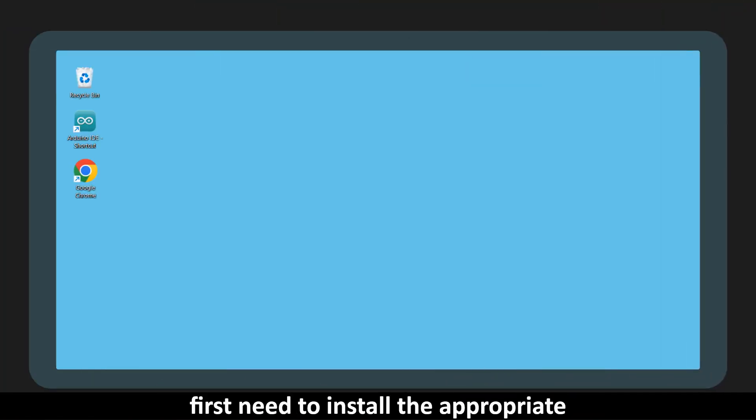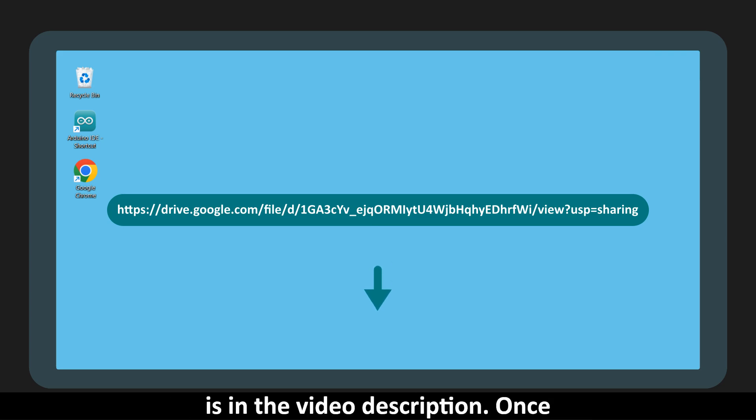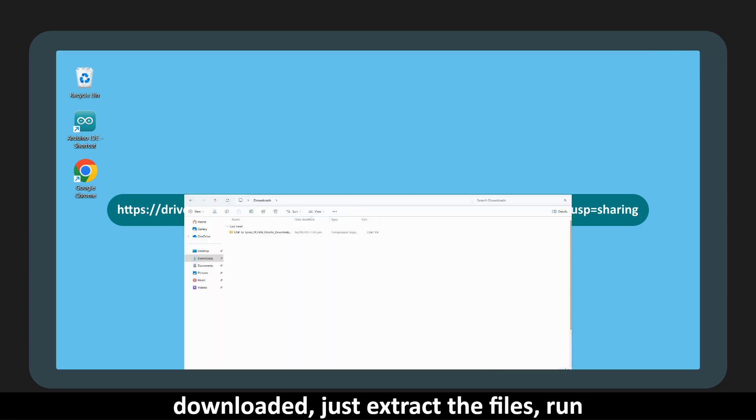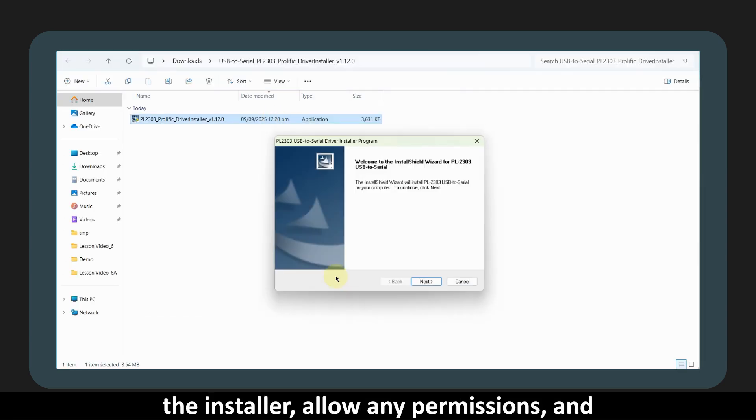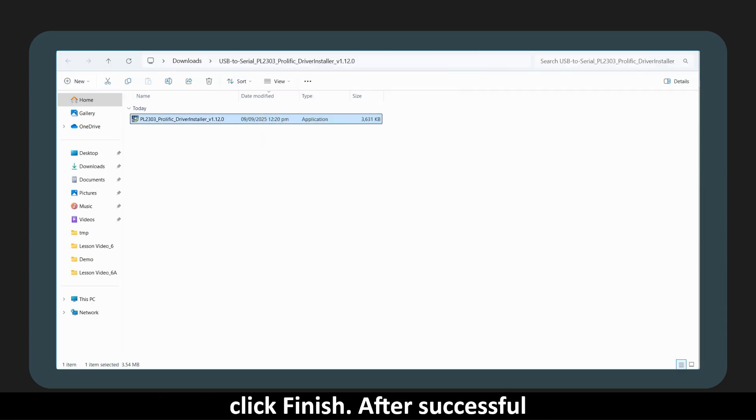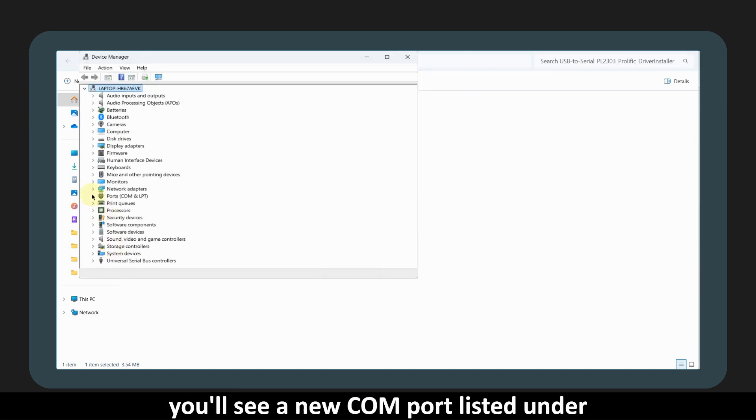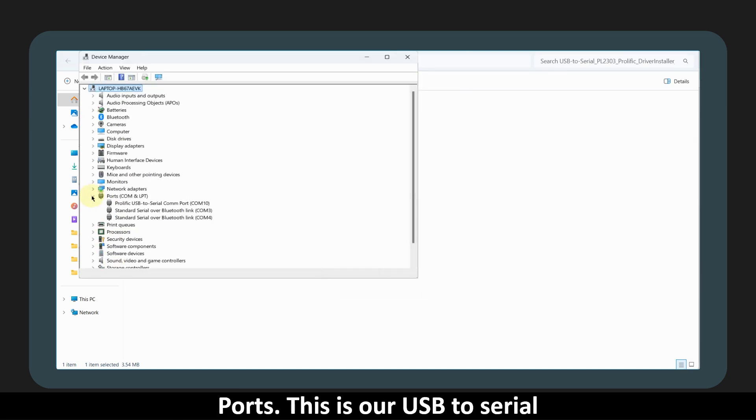Now to use the module, we first need to install the appropriate drivers. The link to download the drivers is in the video description. Once downloaded, just extract the files, run the installer, allow any permissions, and click finish. After successful installation, open the device manager and you'll see a new COM port listed under ports. This is our USB to serial module.